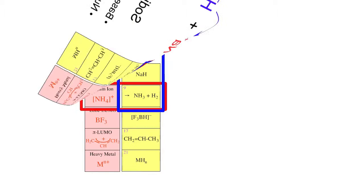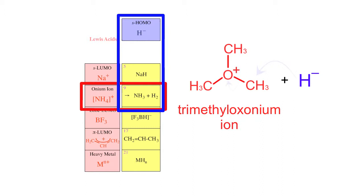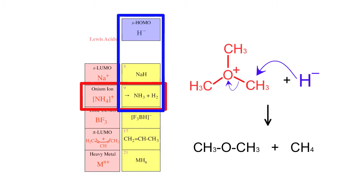If we react an onium ion type Lewis acid such as the trimethyl oxonium ion with hydride ion, the hydride ion reacts as a nucleophile and we get dimethyl ether and methane.